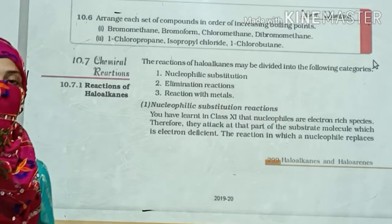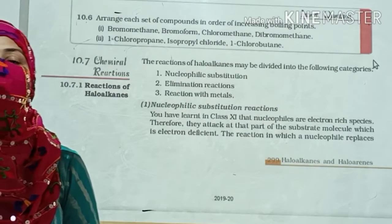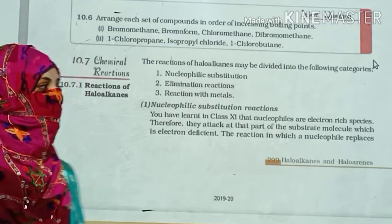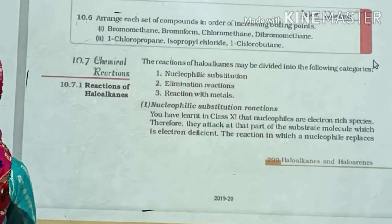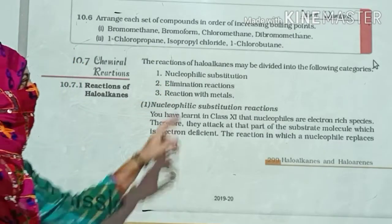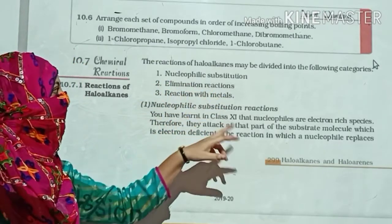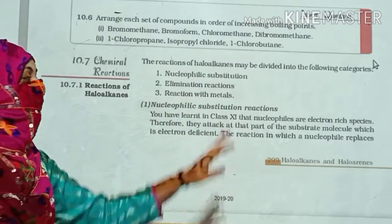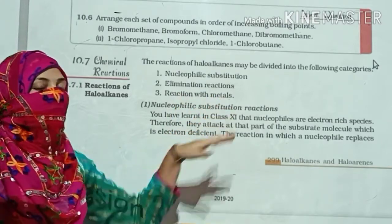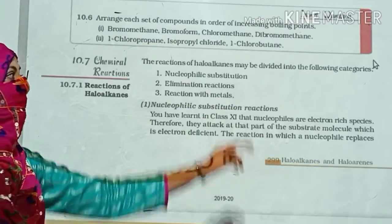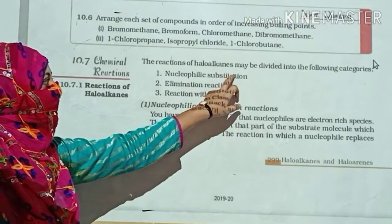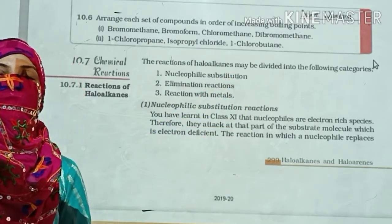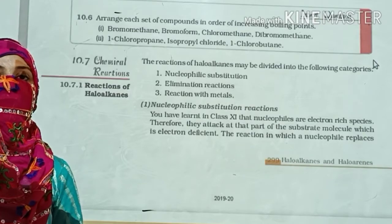Next important topic: chemical reactions. In this chapter we have done three types of reactions. Number one: nucleophilic substitution reaction. Number two: elimination reaction. Number three: reaction with metals. Reaction with metals are very few to remember, but the main ones are the electrophilic and nucleophilic reactions — very, very important.